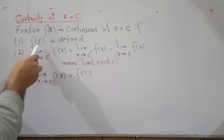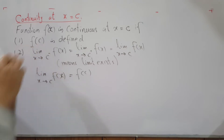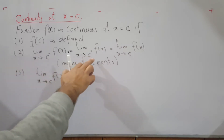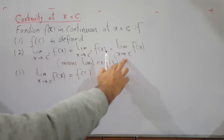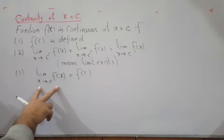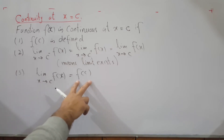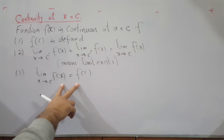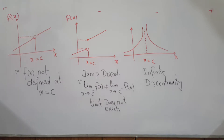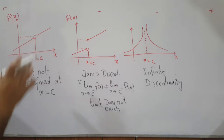The first condition is that the function is defined at that particular point — meaning it's not undefined or infinity. The second condition is that the left-hand limit and the right-hand limit are both the same, meaning the limit exists at that point. The final condition is that the limiting value and the function value at that particular point are both the same. Then we say that the function is continuous at that given point.